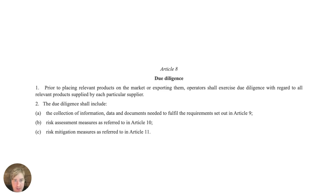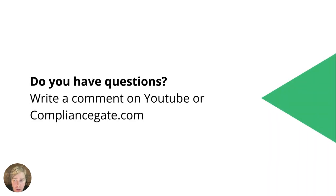Articles 9, 10, and 11 are where you can find more information about the actual items needed as part of your due diligence file. I hope this helped you understand the basics of the EUDR. I didn't intend to cover everything, but I hope this video serves as an introduction. If you have questions, you can write them in the comment section on compliancegate.com or on YouTube.